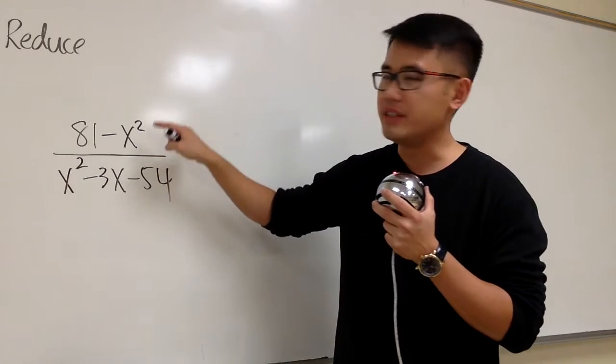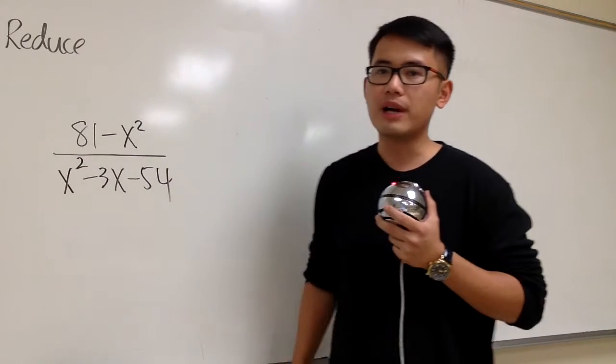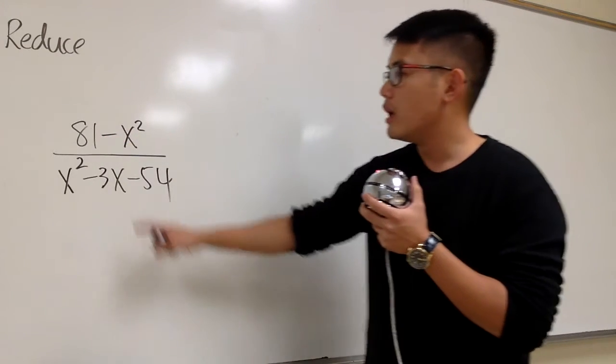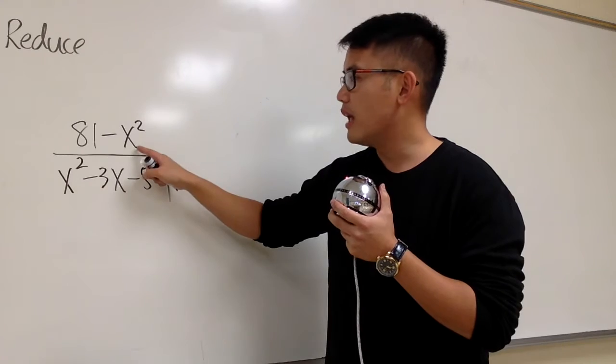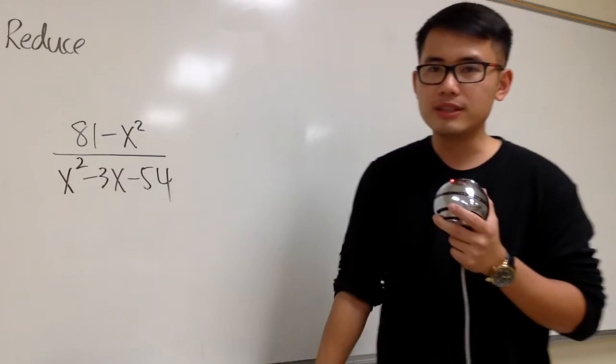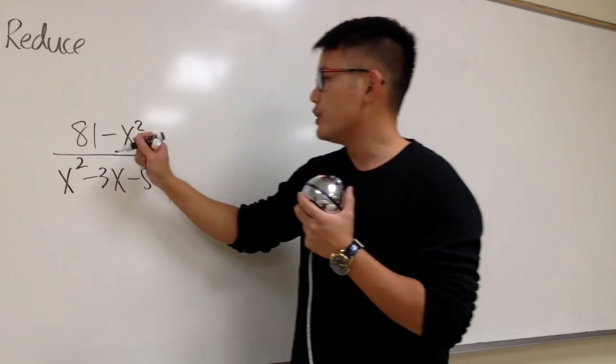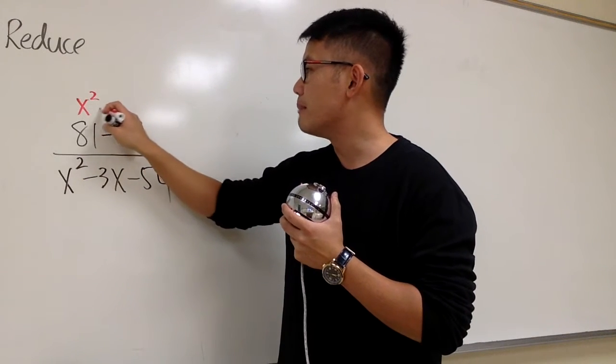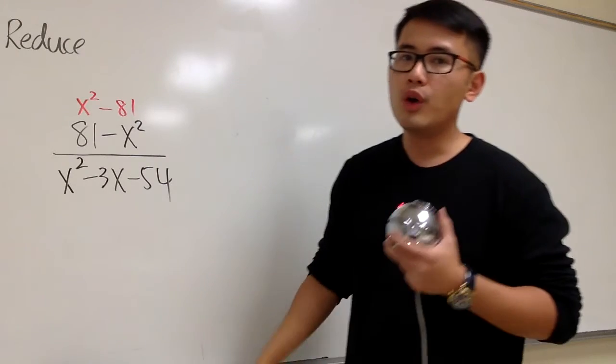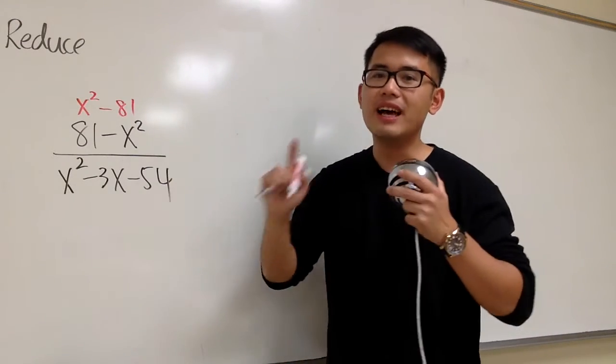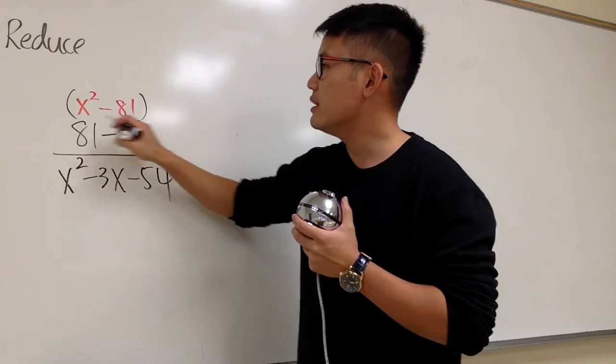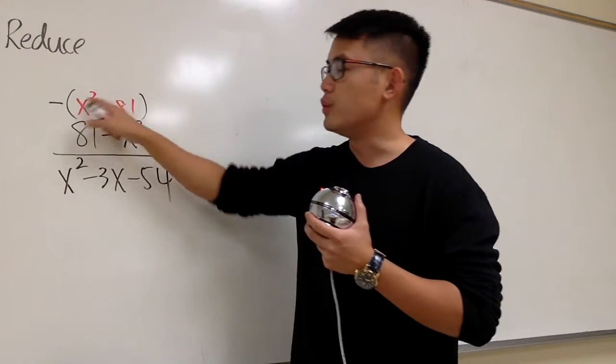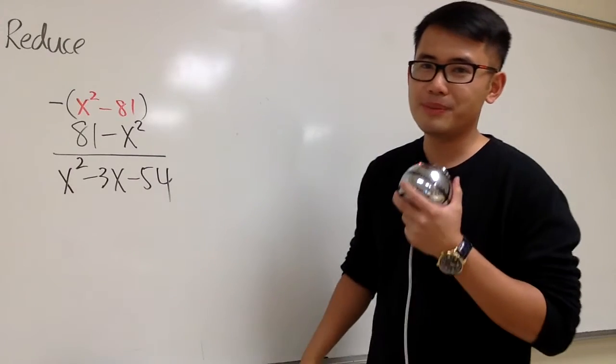because we want to have the x squared goes first. And this is what we can do to take care of this kind of situation. We have 81 minus x squared. It's a subtraction situation. We can just switch the order, and let me put this down first as x squared and then minus 81. We can do something like this, as long as we put a parenthesis and a negative in the front.